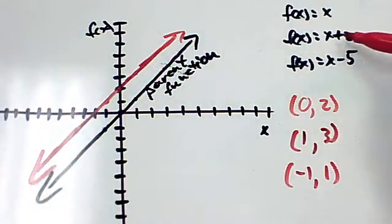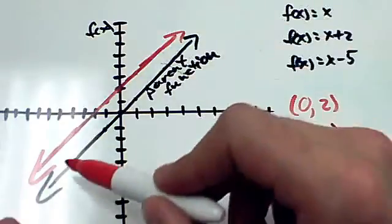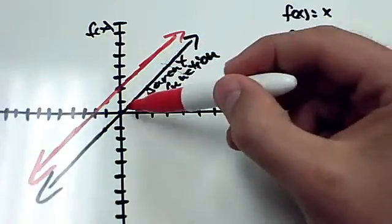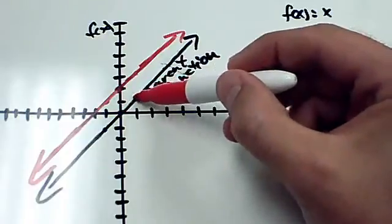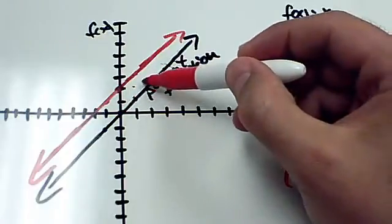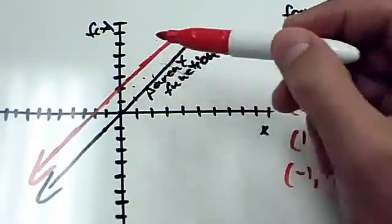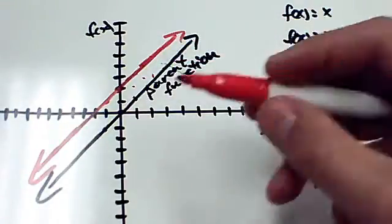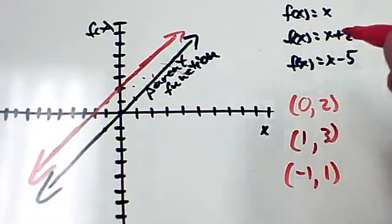Okay, and we see that when we added 2, all that happened was we took this function and we moved it up 2 units. Every time. So we had a translation or a shift vertically. Okay.